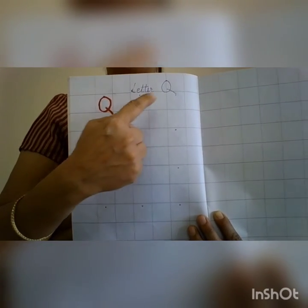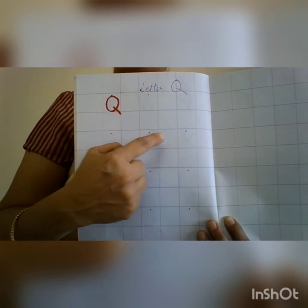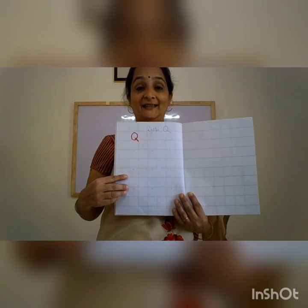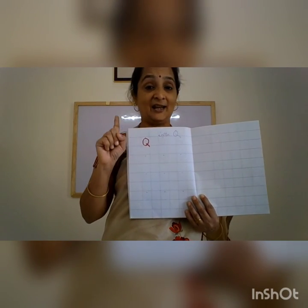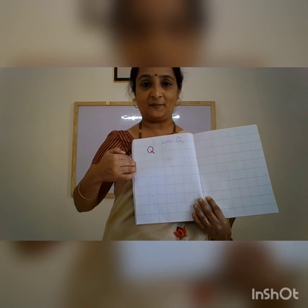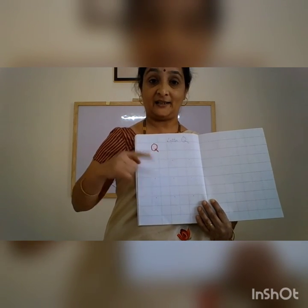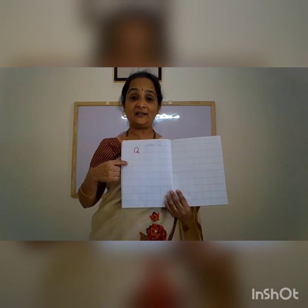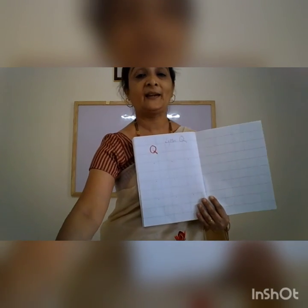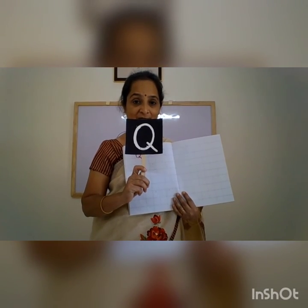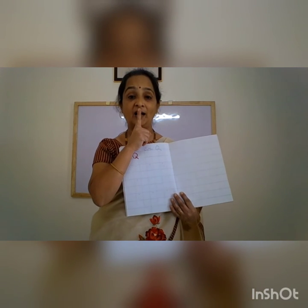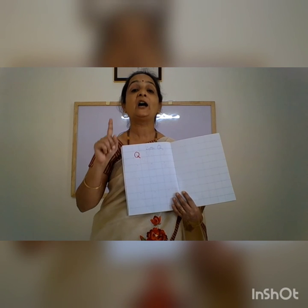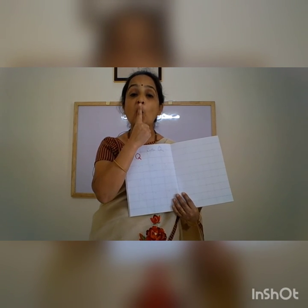Write it in alternate squares and say aloud when you write it. Keep your books neat and clean. Never write inside the margin — this red line is the margin. Alright children, remember letter Q makes the sound 'quo'. Q for queen, quail, quilt, quill, and quiet.